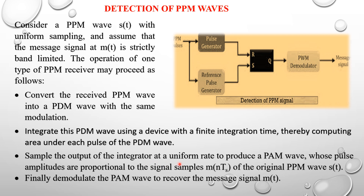Next, sample the output of the integrator at a uniform rate to produce a Pulse Amplitude Modulated (PAM) wave whose pulse amplitudes are proportional to the single samples m(nTs) of the original PPM wave s(t). Finally, demodulate the PAM wave to recover the message signal m(t).